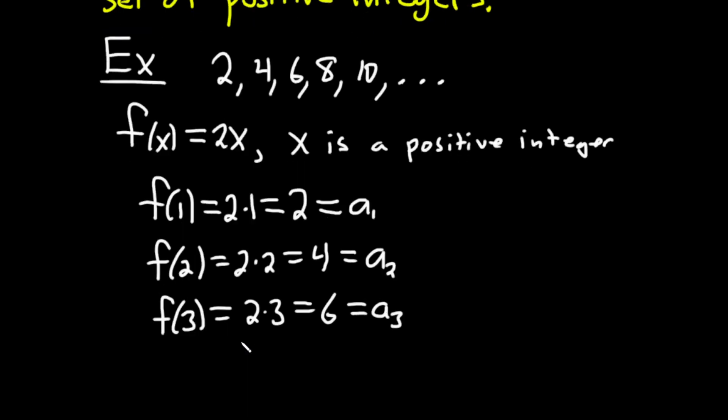And let's just do one more just to really add clarity here. F of 4, this is 2 times 4, which is equal to 8, which is equal to A sub 4.